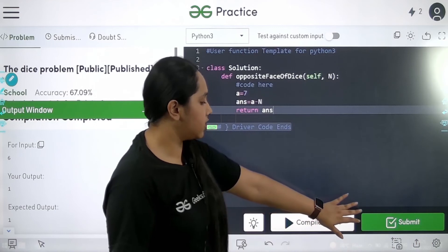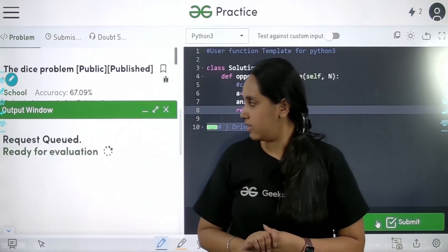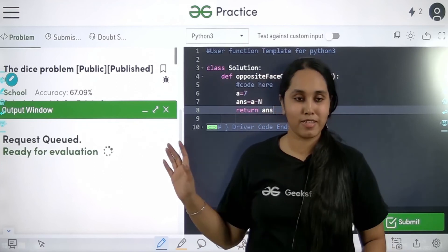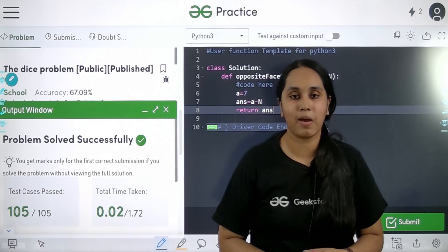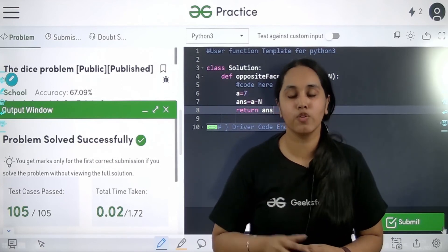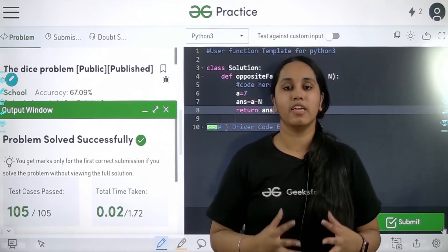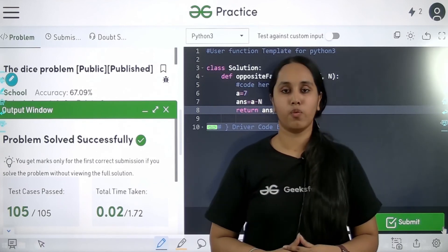Now let me click on submit to be sure of the answer. So let us wait. Let us give it some time. Okay. So see, all the test cases are passed and my problem is successfully submitted. So this is the solution for the dice problem and I hope you have found this video helpful and thank you so much for watching it. Thank you.